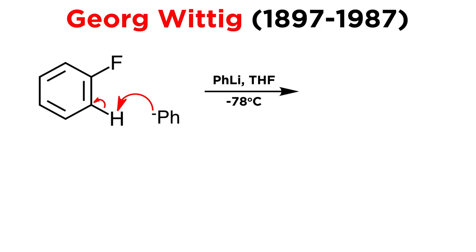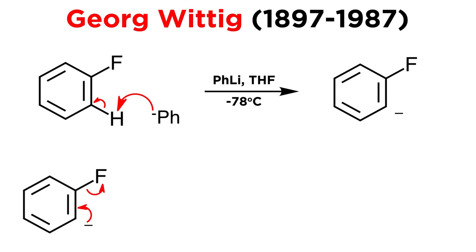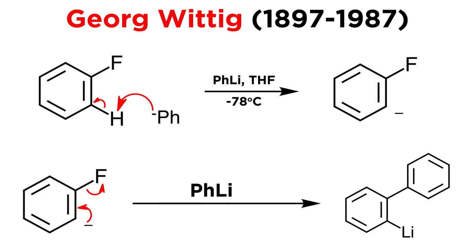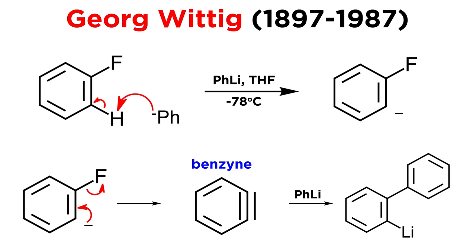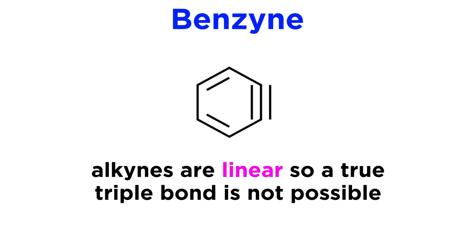This can be followed by beta elimination of fluoride, which in the presence of another equivalent of phenyl lithium produces a biphenyl compound, with the carbanion coordinated to lithium. What Wittig did was to describe the intermediate as benzyne, meaning a benzene ring with a triple bond.